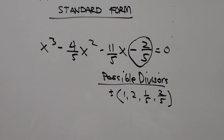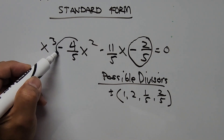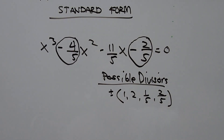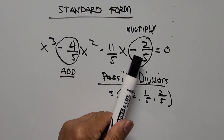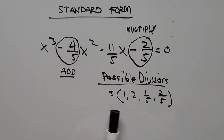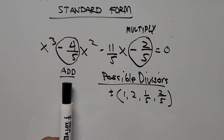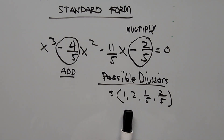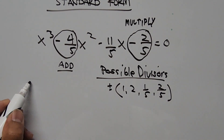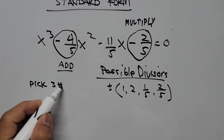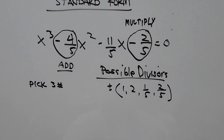Now let's focus on the second term coefficient, negative 4/5. From here we'll be picking three numbers out of the possible divisors: when we multiply them they will yield negative 2/5, and when we add them they will yield negative 4/5.